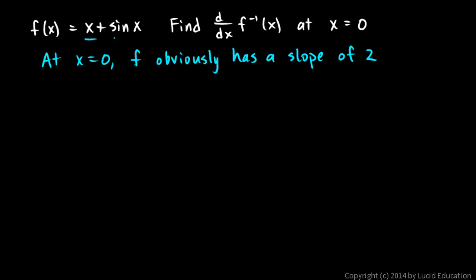The derivative of this is going to be 1 plus cosine x. And that's pretty easy, because cosine of 0 is 1, so we just have 1 plus 1 is 2. So if you can't picture the graph in your mind and see that it has a slope of 2, you can differentiate that pretty easily. 1 plus cosine x, and evaluating that at x equals 0 gives you a slope of 2.